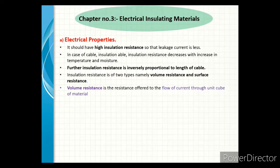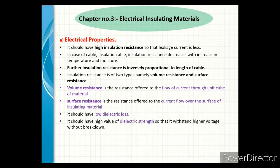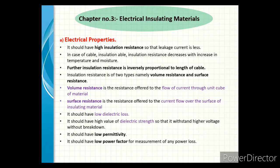Volume resistance is the resistance offered to flow of current through a unit tube of material. Surface resistance is the resistance offered to the current flow over the surface of insulating material. It should have low dielectric losses. It should have a high value of dielectric strength so that it can withstand higher voltage without breakdown. It should have low permittivity and low power factor for measurement of any power loss.